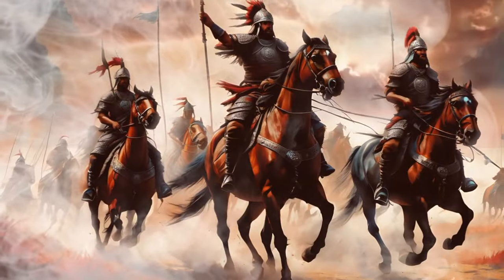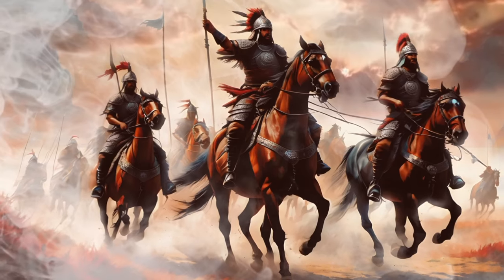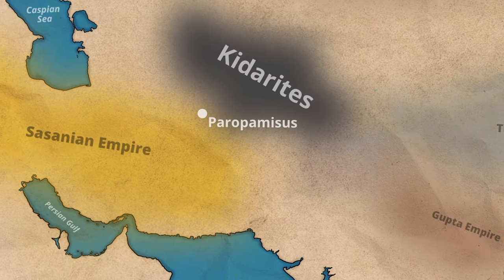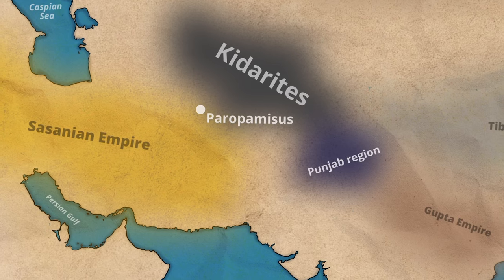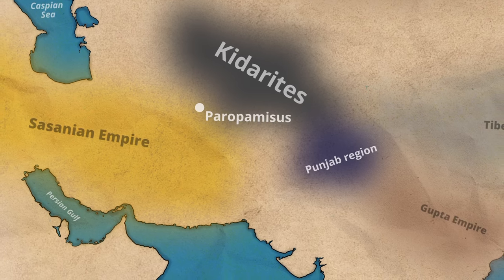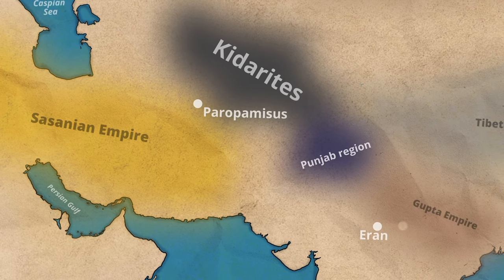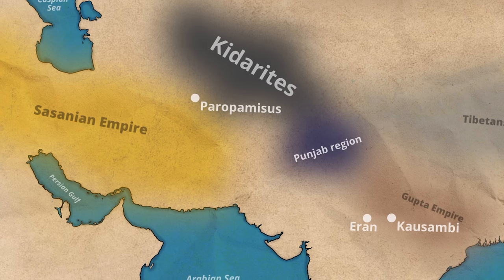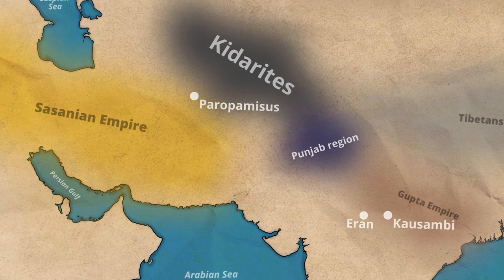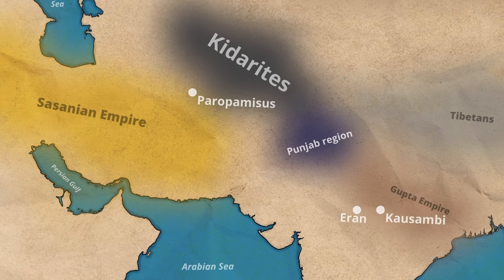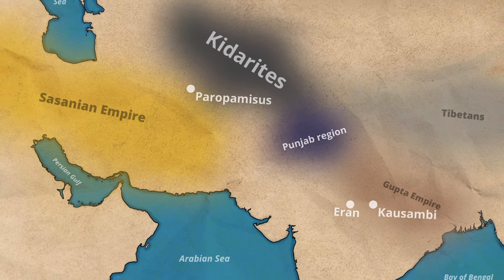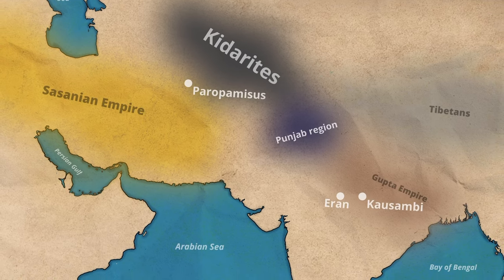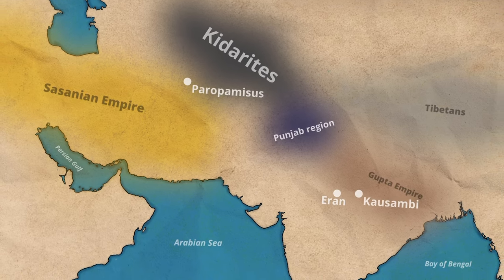These new dynastic Huns were first mentioned as being located in Paropamasas, and later expanded southeast into Punjab and central India, as far as Aran and Kazambi. The Alkan invasion of the Indian subcontinent eradicated the Kitarite Huns who had preceded them, and contributed to the fall of the Gupta empire, and in a sense brought an end to classical India.